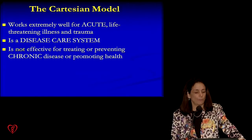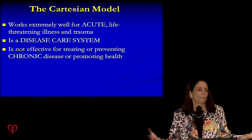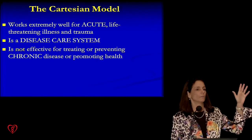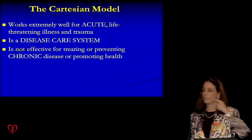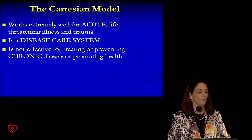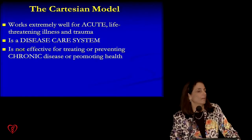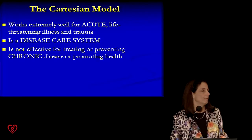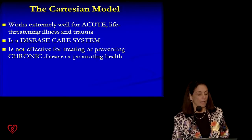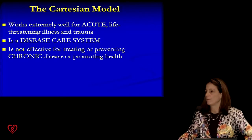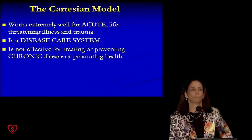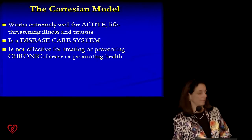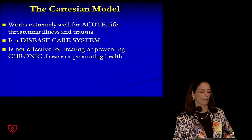Lee told me that the model of healthcare that we practice is called the Cartesian model of healthcare. This is the model we learned in medical school — the model that works really well for acute life-threatening emergencies. But as you'll see, it's based on a disease care system, and it's certainly not effective for treating or preventing the chronic diseases that many of us see every day in our practice.